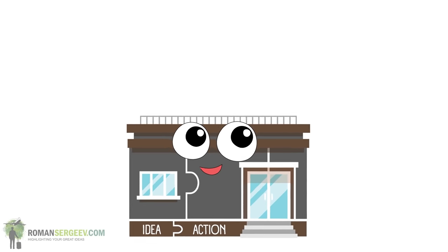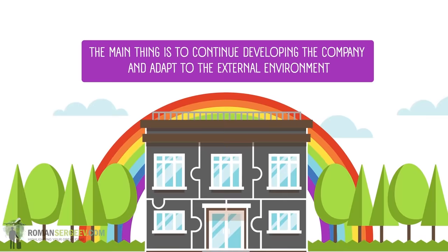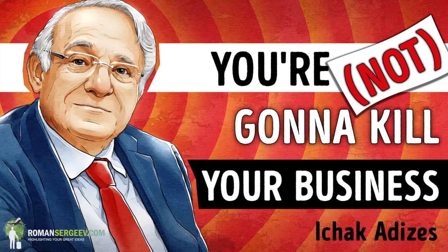What are the similarities between a company and a living organism? How to distinguish normal problems from abnormal ones, and which ones to address first? Can your business gain immortality? This is a summary of Managing Corporate Lifestyles by Ishak Adizes.